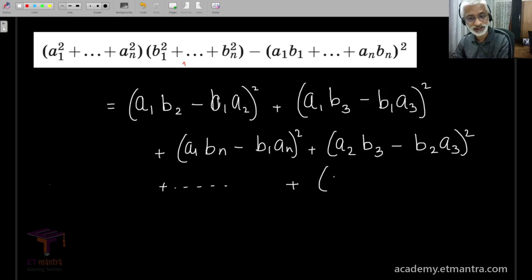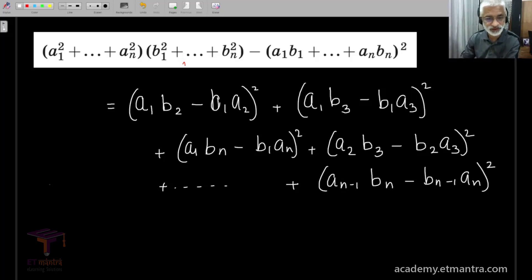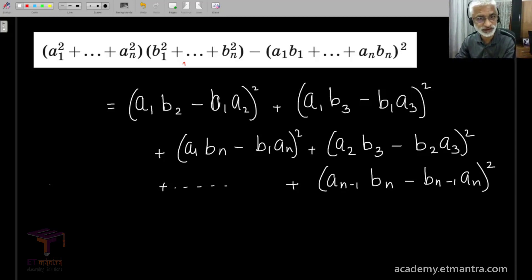Continuing, we include all pairs where the b-index is higher, all the way to the last term: a_{n−1}·bn − b_{n−1}·an, whole squared. This is the last term. The fact that the LHS equals the RHS is fairly believable when you match up all the terms on both sides.